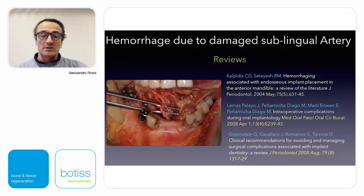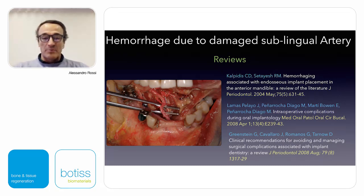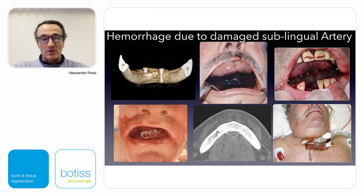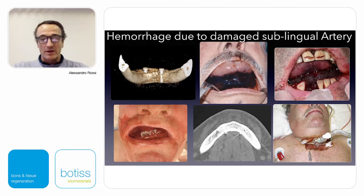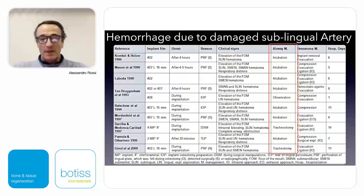Looking into the literature, we have a lot of case reports. In a seemingly simple situation, very great complications can arise when the surgeon doesn't know the anatomy of this area, which is normally considered quite safe. Looking at the submental artery, you can see the cost to resolve such complications — intubation, observation — situations that are really very dramatic. You have to be very careful and to know the anatomy of the area you are treating.